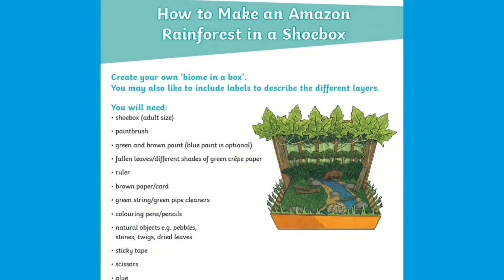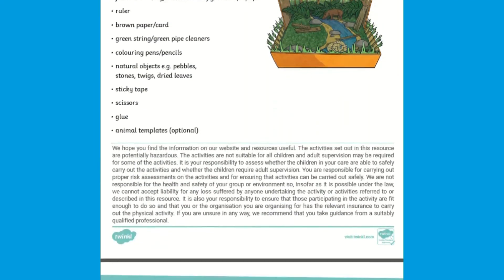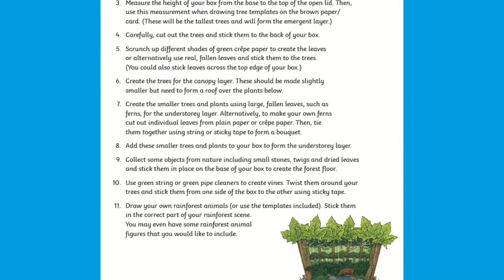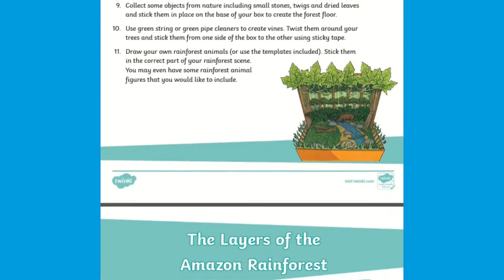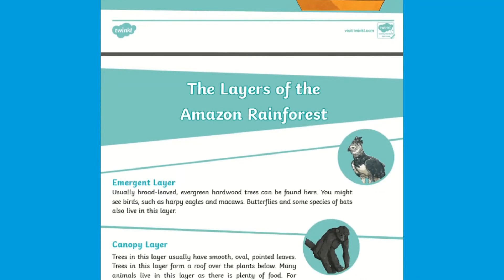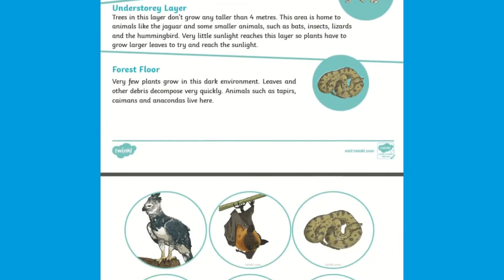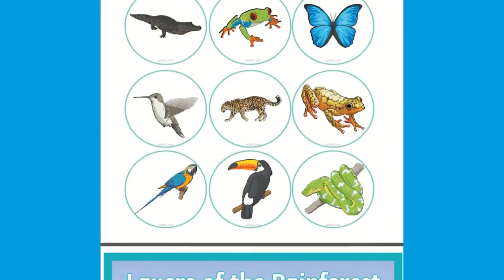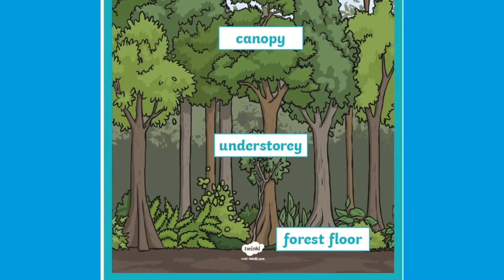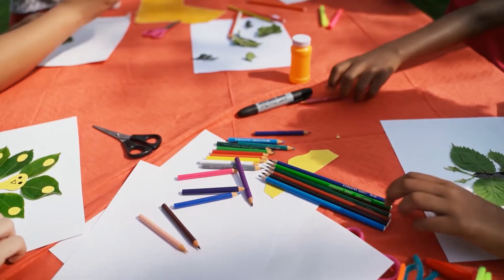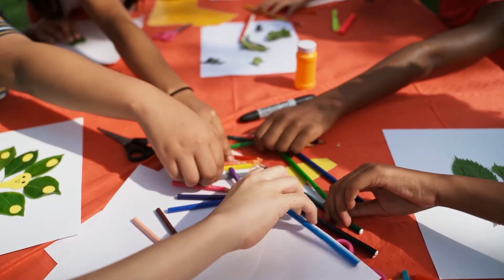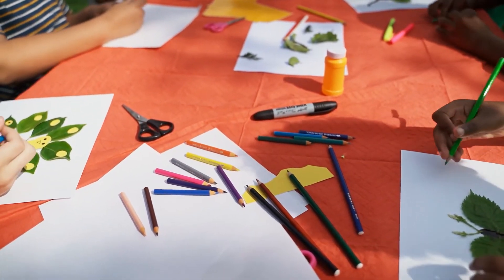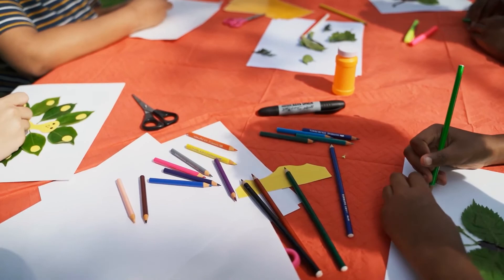For a fun, creative, independent task, this Amazon rainforest in a shoebox is perfect to support your teaching on the rainforest in the classroom or at home. This free resource outlines the materials you will need with simple instructions to create a rainforest. Children can complete this craft activity independently or as part of a group to make a shoebox habitat and think about the placement and importance of the layers of the Amazon rainforest and where the different types of animals are found. You can encourage children to draw their own animals if they wish or use a variety of templates, which would be a lovely addition to your child's shoebox Amazon rainforest.